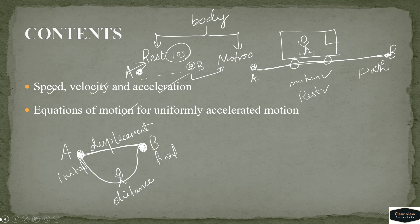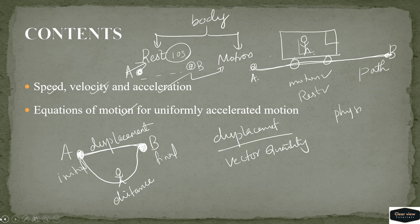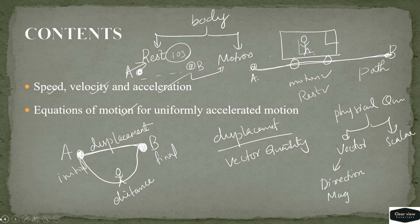What is displacement? The straight line distance from the initial position to the final position is called displacement. Displacement is a vector quantity. We divide physical quantities — vector quantity has both magnitude and direction.